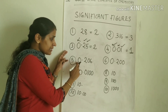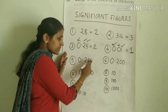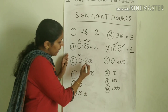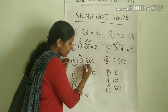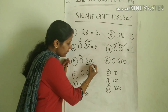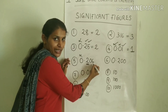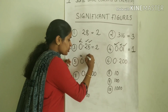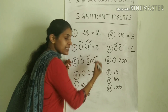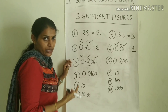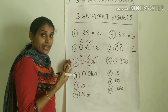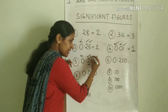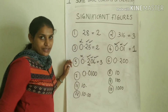Fifth example: 0.206. The leading zero on the left side is not a significant figure. However, if you have a non-zero value, then a zero, then a non-zero value — all are significant figures. So 2 is a significant figure, the 0 in between is a significant figure, and 6 is a significant figure. Number of significant figures is equal to 3.